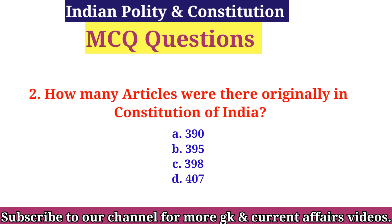Question 2: How many articles were there originally in the Constitution of India? Option A: 390, B: 395, C: 398, D: 407. The right answer is Option B, 395.